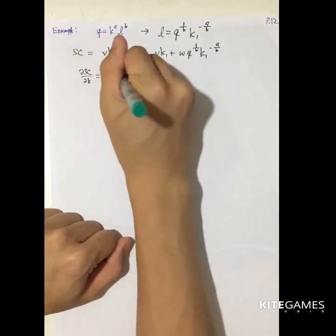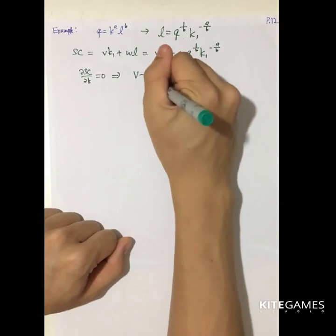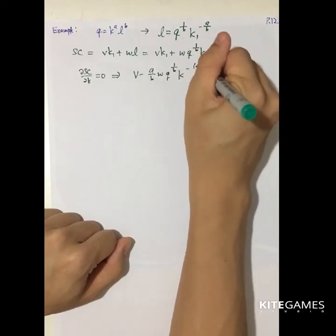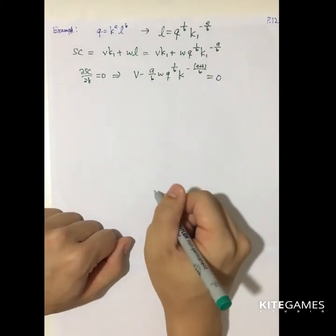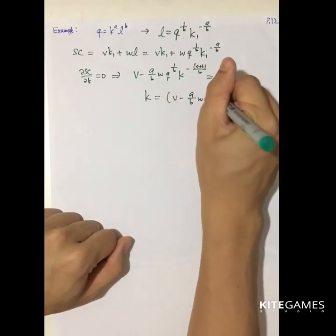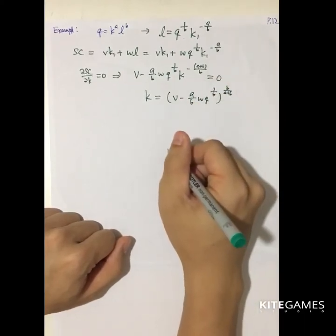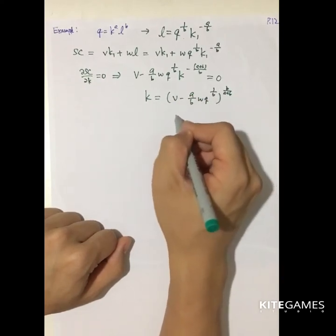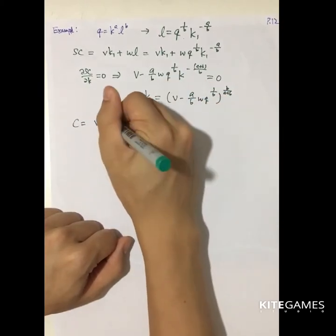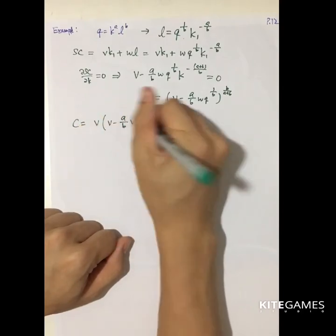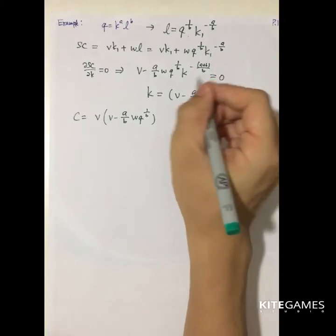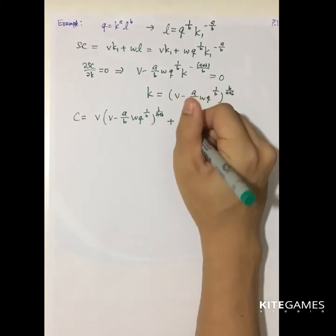To find the long-run total cost, take partial SC partial K and set it equal to zero. This gives V minus A over B times W times Q to the power 1 over B times K to the power negative A plus B over B equals zero. Solving for K gives the optimal capital as a function of V, W, and Q. Then substitute this K back into the labor expression, and compute total cost as VK plus WL.